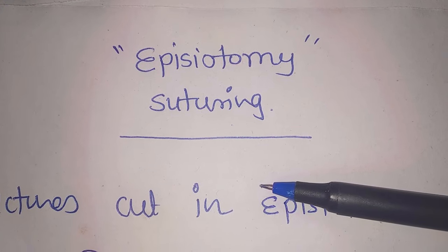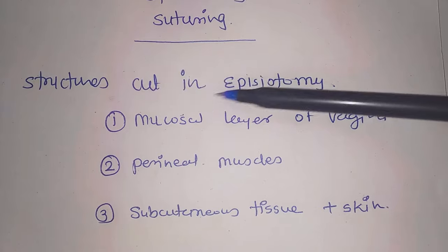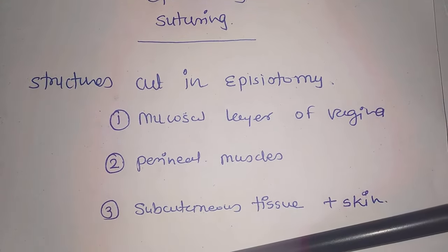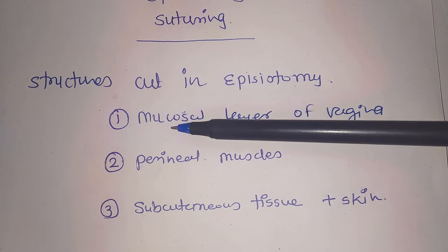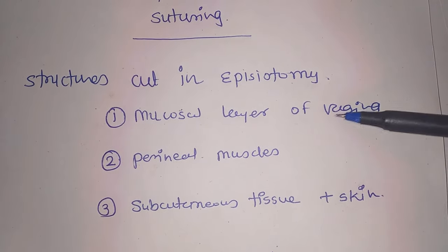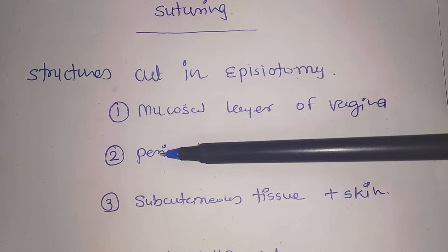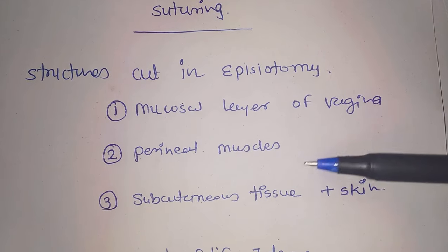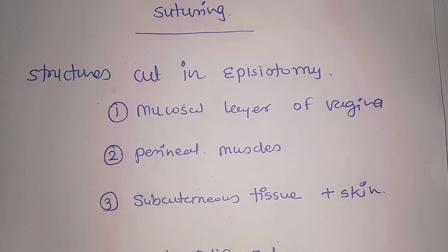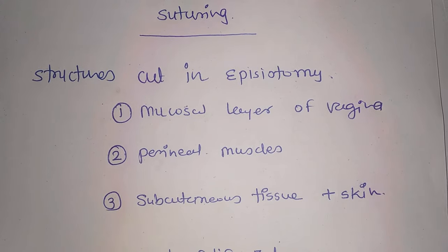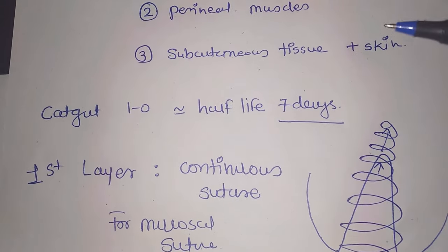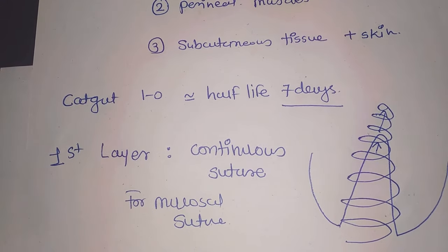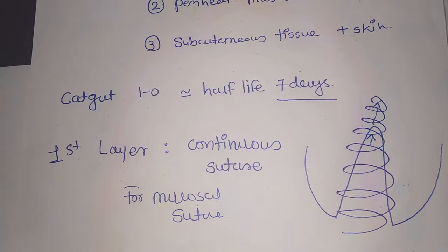In episiotomy suturing, three layers are cut: first is the mucosal layer — the vaginal mucosa — second is the perineal muscles, and third is the subcutaneous tissue plus skin. Using catgut as the suture material, we will suture all three layers layer by layer.